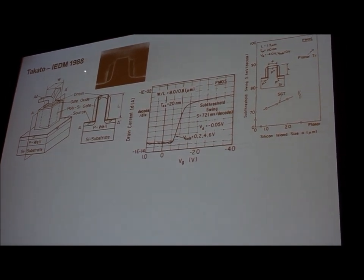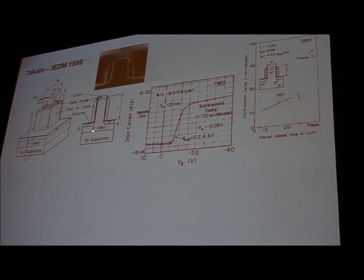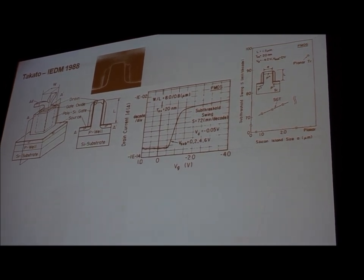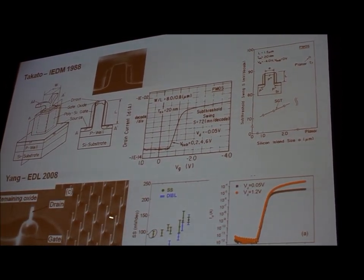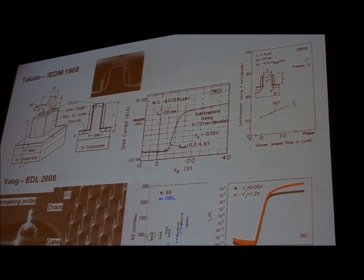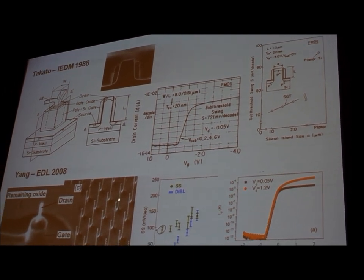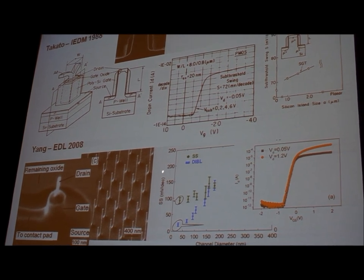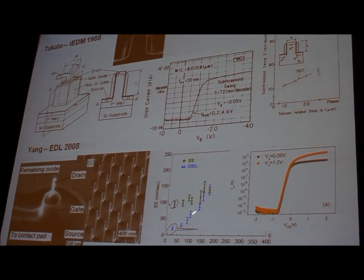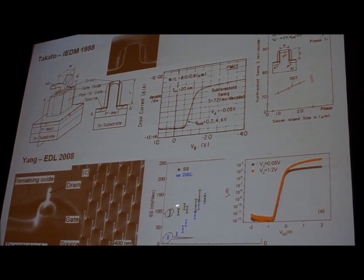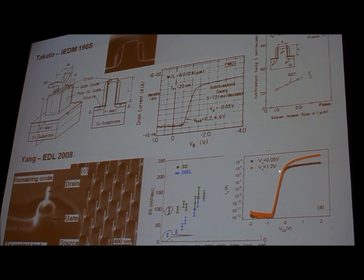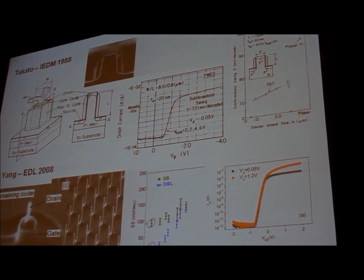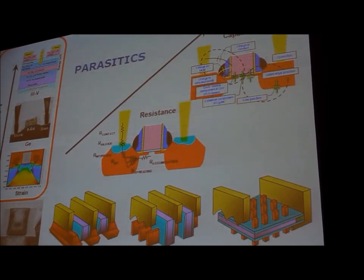People have been working on gate-all-around devices almost as long as thin fins, but they're substantially harder to build. An example from Takeda in 1988 showed the gate-all-around device and some performance improvement. A much more recent example with phenomenal pictures shows vertical nanowires with the gate and drain, and nicely shows the improvement in subthreshold slope as you drop the diameter — with a fabulous IDVG. There's certainly something here for the future, but it's not going to be easy.